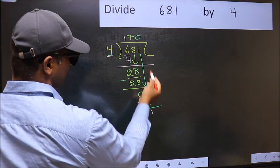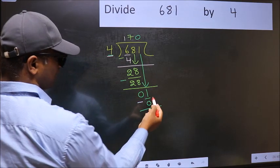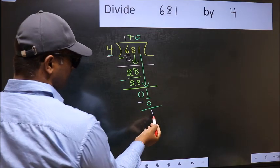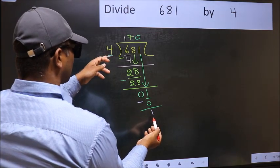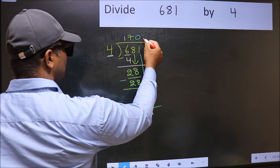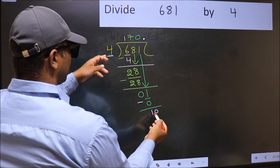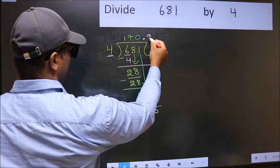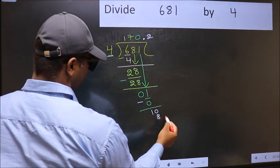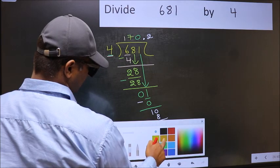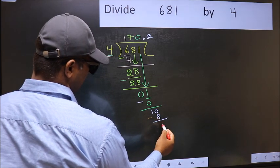Over here, we did not bring any number down. And 1 is smaller than 4. So now you can put a dot and take 0. So 10. A number close to 10 in 4 table is 4 twos, 8. Now you should subtract. 10 minus 8, 2.